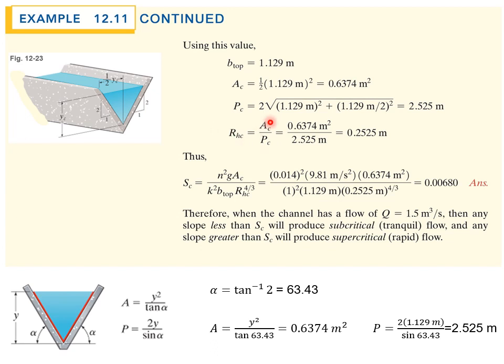The hydraulic radius is AC over PC. Finally, you can calculate the critical slope by plugging in your values here, 0.00680. Therefore, when a channel has a flow of 1.5 cubic meters per second, as stated in the problem, any slope less than this SC will produce subcritical or tranquil flow, and any slope greater than SC will produce supercritical or rapid flow.